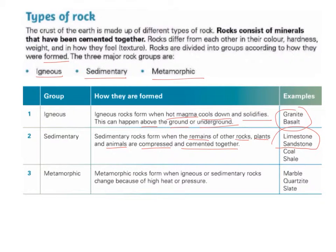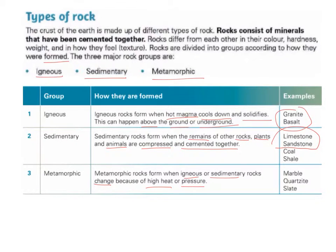Metamorphic rocks form when igneous or sedimentary rocks change because of high heat or pressure. So metamorphic rocks were originally igneous or sedimentary. Examples of metamorphic rock are marble, quartzite and slate. The two that we will learn about in detail are marble and quartzite.